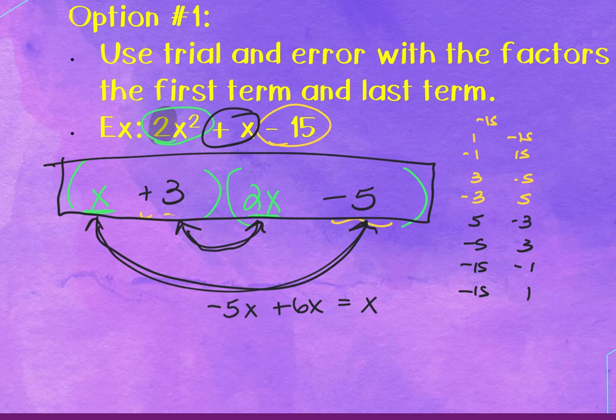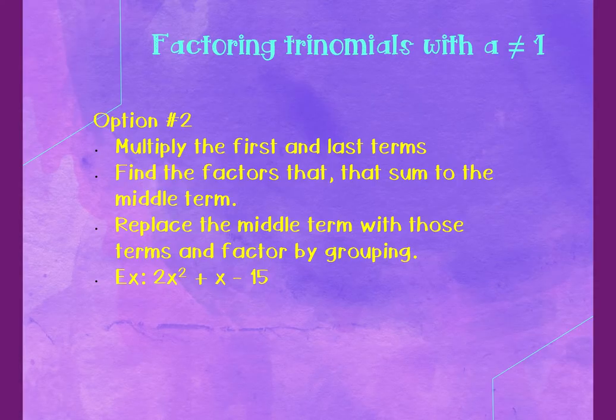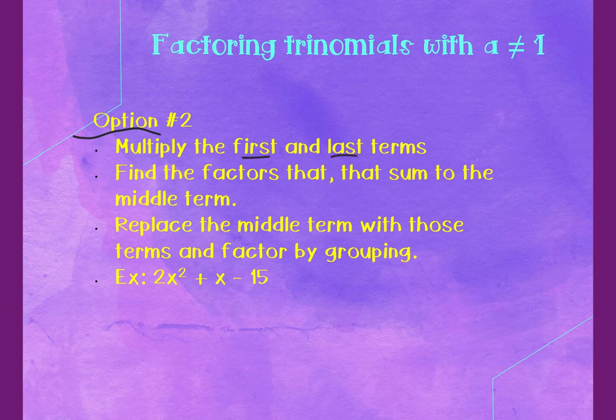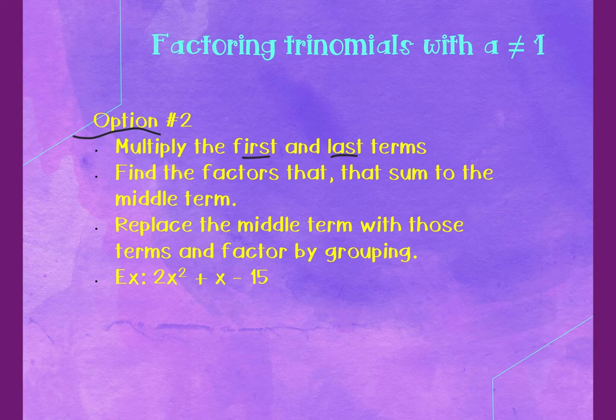The second method is called 'first and last.' Step 1: multiply the first and last terms. Step 2: find the factors of that product that sum to your middle term. Step 3: replace the middle term with those two terms — giving four terms. Step 4: factor by grouping.